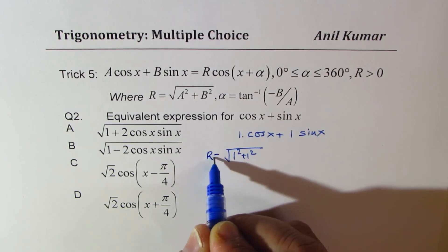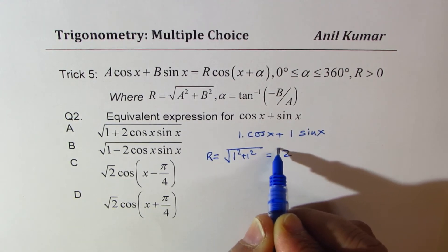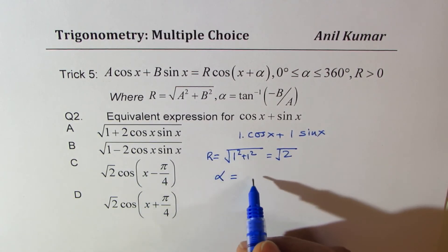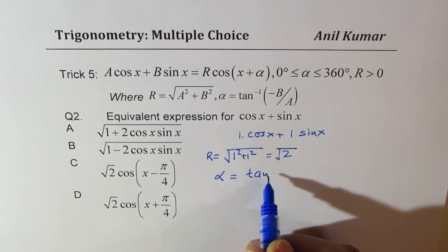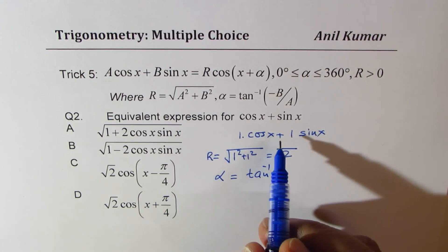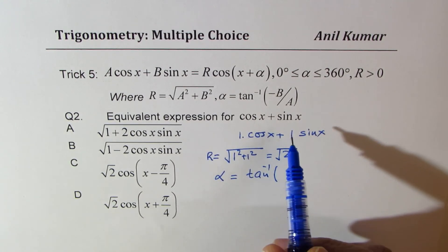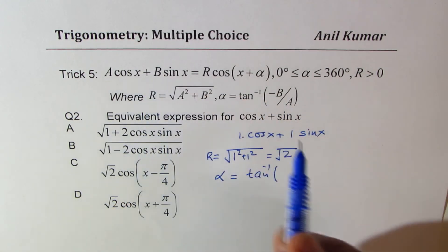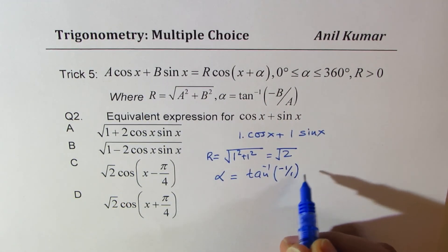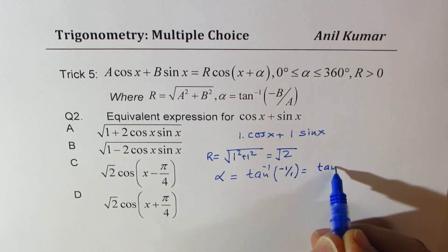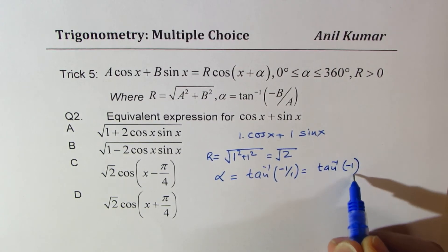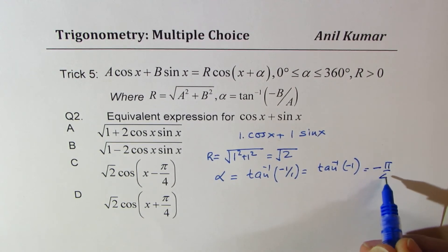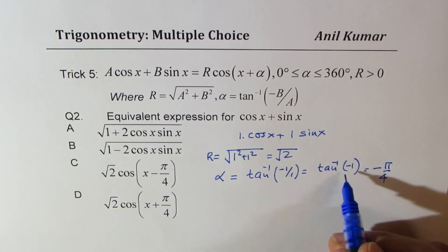And as far as alpha is concerned, I could write this as tan inverse of minus B over A. So it is minus 1 over 1, we get tan inverse of minus 1, which is minus pi by 4. Do you get an idea? Minus pi by 4.